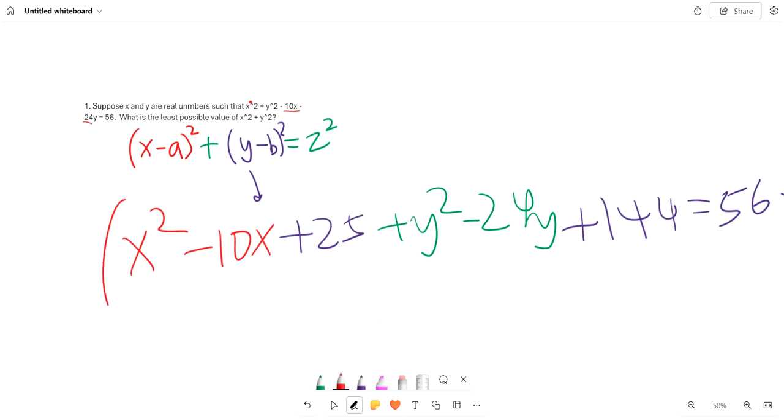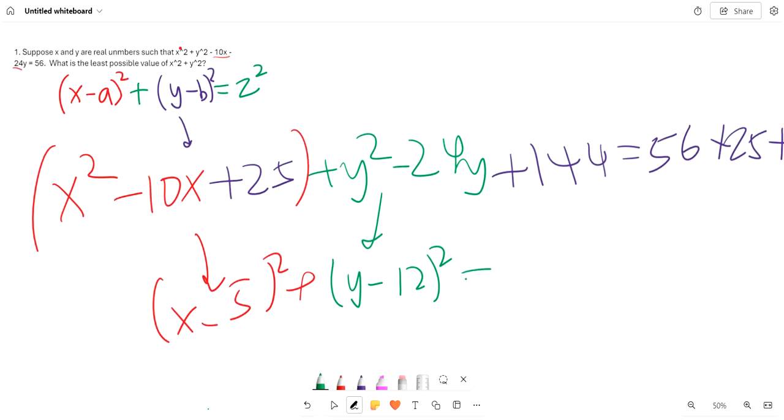So factoring we get that this is equal to (x - 5)² + (y - 12)² = 15².